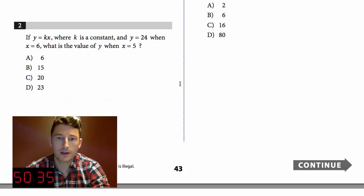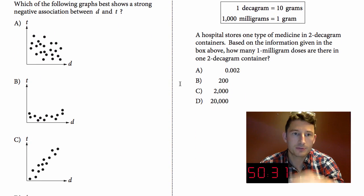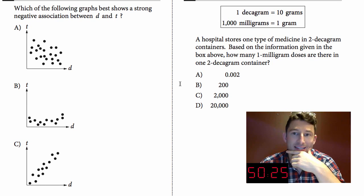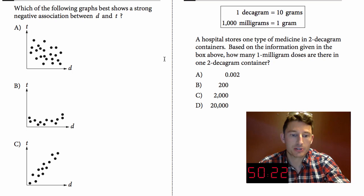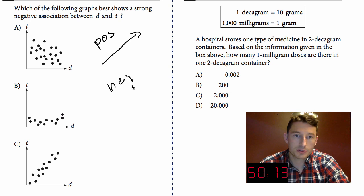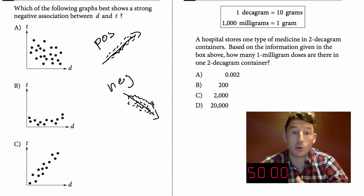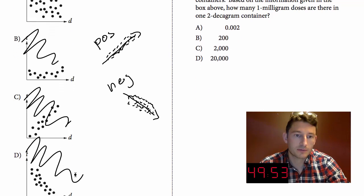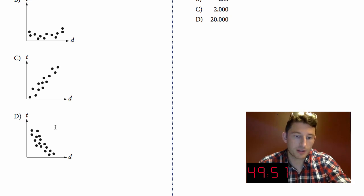Number five: Which of the following graphs best shows a strong negative association between d and t? What does it mean to have a strong negative association? Positive associations go up, negative ones go down. If it's tightly grouped, if all the data points are really close to one another, that's a strong relationship. So basically we're looking at something that has a lot of data points grouped together going down. Not that one, not that one, not that one. Well what the heck is left? Choice D. It's the only one left going down with points tightly together. Let's move on.